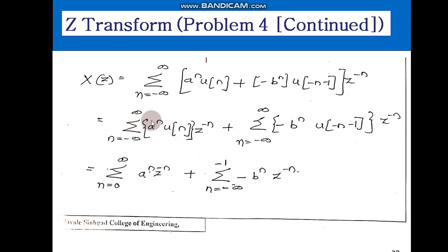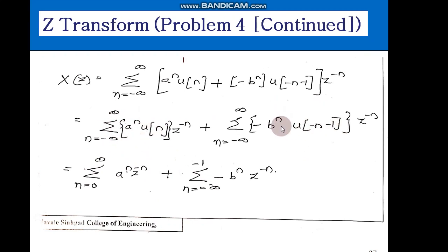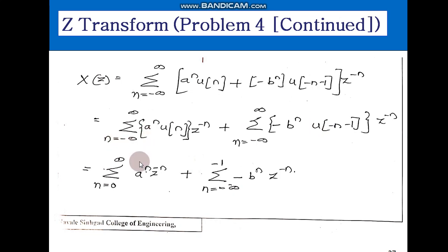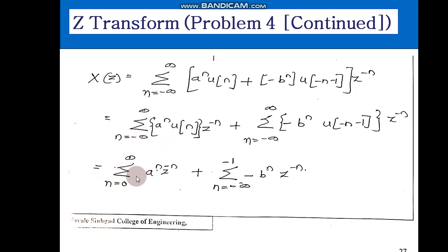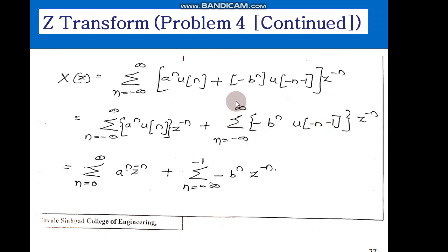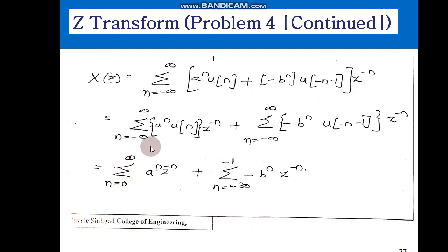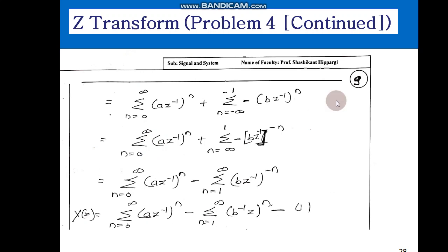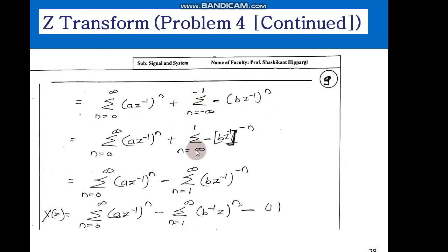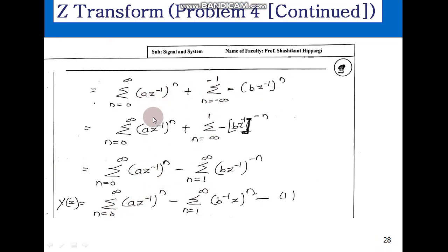These two parts correspond to the second and third problems we solved earlier — there is no difference from what we have solved before. The first sum becomes from 0 to infinity of a raised to n z to the power of minus n, since u(n) equals 1 in that range. The second sum becomes from minus 1 to minus infinity of b raised to n z to the power of minus n, which simplifies to b inverse and z raised to plus 1 after taking the minus inside.